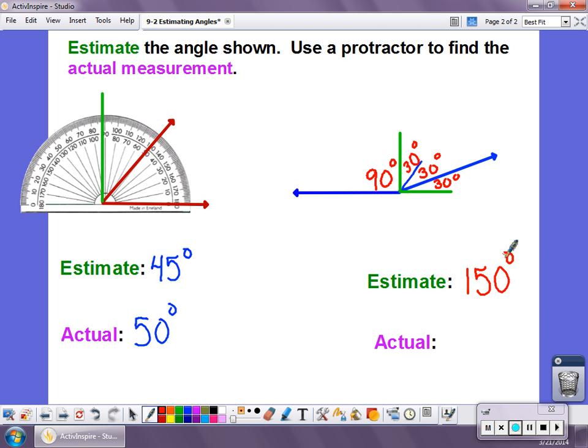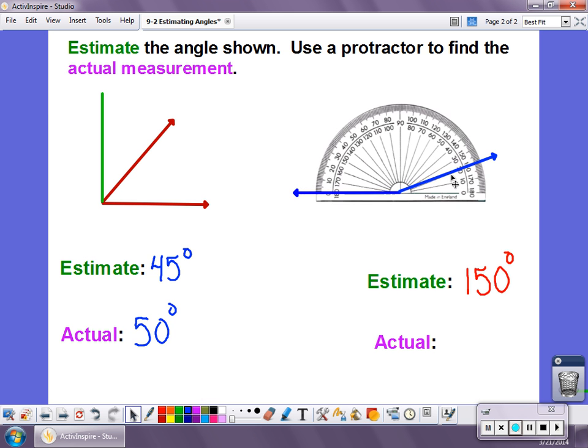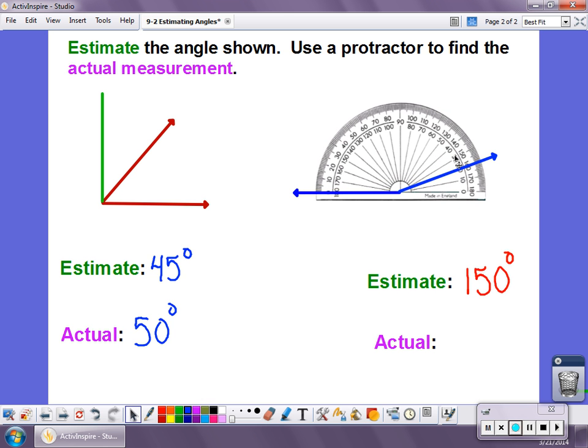So what I want to do now is I'm going to measure this. I need to get rid of all the benchmark lines that I drew in. And now let's use our protractor to try to measure this. If I do that and I look at it, I see 150 degrees is here. So again, we had a pretty good estimate. Our actual measurement for this one is 160 degrees.